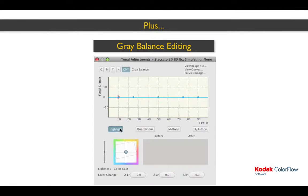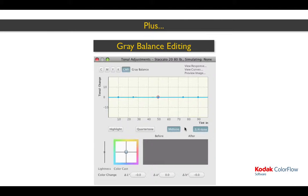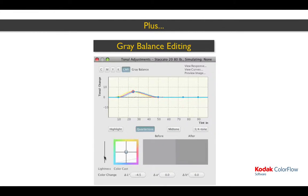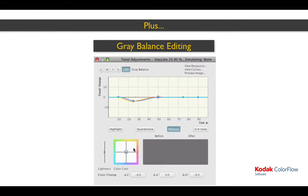Another key ColorFlow software feature is the grey balance editor, which lets you maintain neutral grey while adjusting lightness, or alternately, maintaining lightness while correcting for tints and three-color grays. This powerful feature can save hours of curve editing time, as well as greatly reduce the number of required press runs, saving ink, paper, and expensive press time.